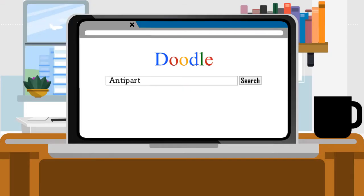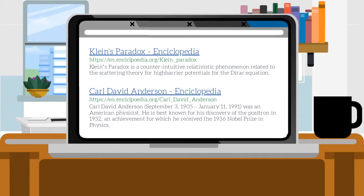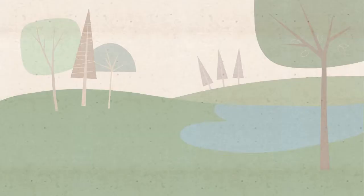An important consequence of the existence of antiparticles is Klein's paradox, a counterintuitive relativistic phenomenon related to the evolution of free particles in presence of very high barrier potentials. Klein's paradox can be explained using the following example.